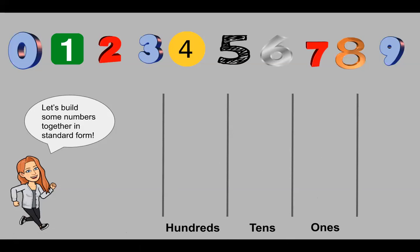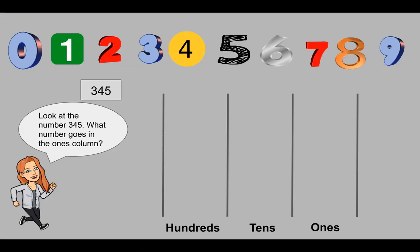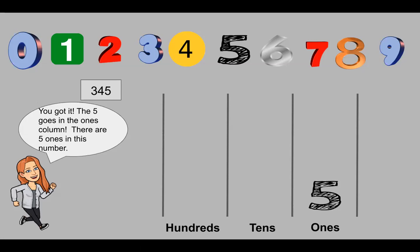Let's build some numbers together in standard form. Remember, standard form is when we just use the numbers — the numerals. Let's look at the number 345. What number goes in the ones column? Let's think about this now.